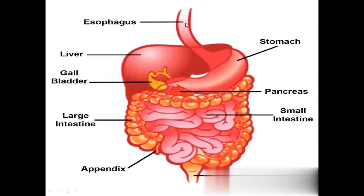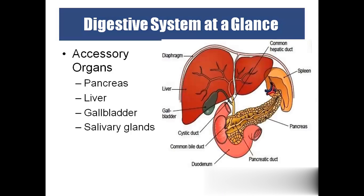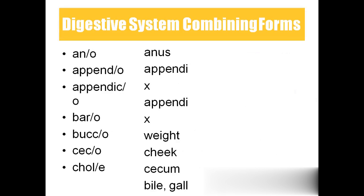The GIT includes the esophagus, stomach, small intestine, and large intestine. The large intestine includes the appendix, ascending colon, transverse colon, descending colon, sigmoid colon, rectum, and anus. The parts of the GIT form a continuous passage: oral cavity, pharynx, esophagus, stomach, small intestine, and colon. Accessory digestive organs are the pancreas, liver, gallbladder, and salivary glands.